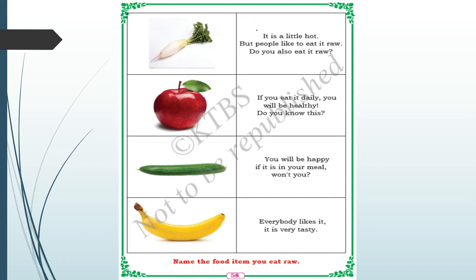Tomato. Then one that is a little hot but people like to eat raw — it is a radish. Then if you eat it daily you will be healthy — it is an apple. Then one that makes you happy in your meal — it is a snake guard. And lastly, everybody likes it because it is very tasty — that is banana.